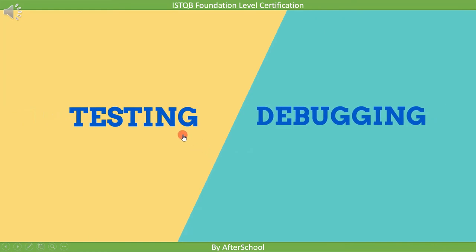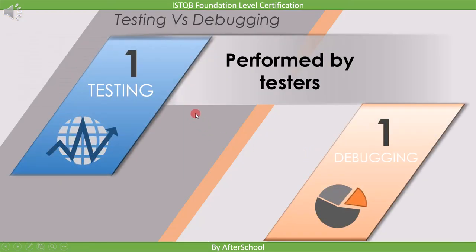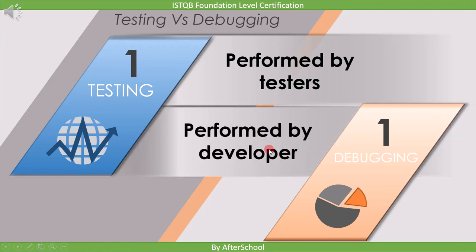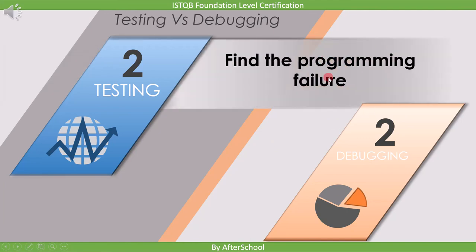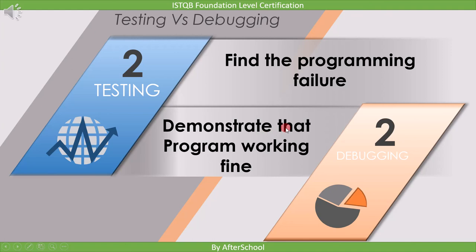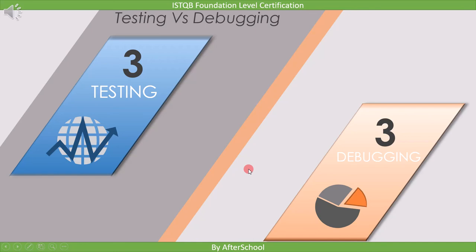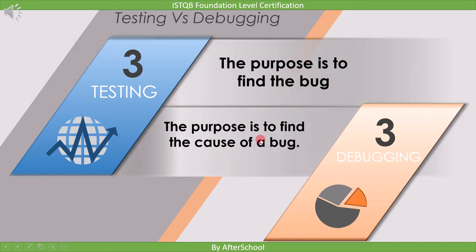Let's have a look at the differences between testing and debugging. The first difference is that testing is performed by a tester and debugging is performed by a developer. The second difference is testing finds the programming failure, whereas debugging demonstrates that the program is working fine. The last difference is testing is done with the purpose of finding a bug, whereas debugging is done to find the cause of the bug.